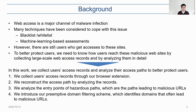First, we collect users' access records through our browser extension. Then, we reconstruct the access path by analyzing the records. Then, we analyze the entry points of hazardous paths, which are the paths leading to malicious URLs. Finally, we introduce our preemptive domain filtering scheme, which identifies domains that often lead to malicious URLs.